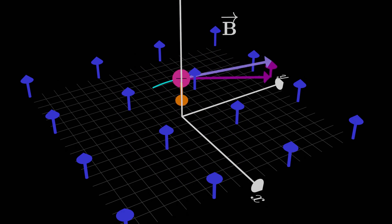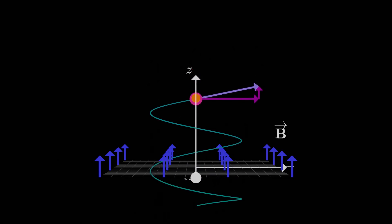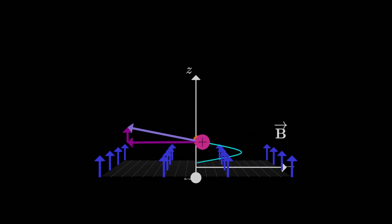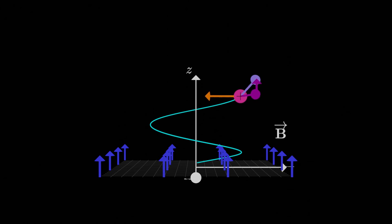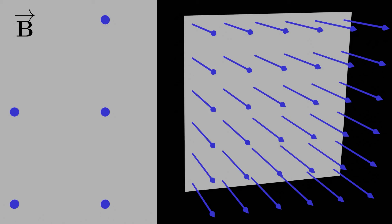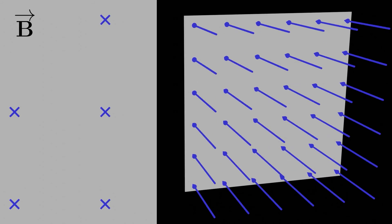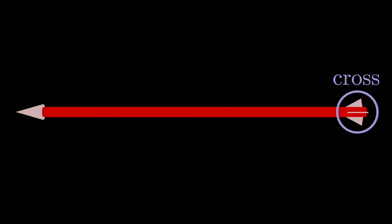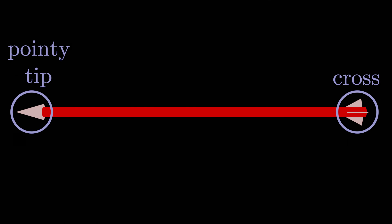Just one last point: when drawing magnetic fields on paper, if the magnetic field is coming out of the screen or out of the page, we use dots to symbolize that. If the magnetic field is going into the screen or into the page, we use little crosses. This symbolism comes from imagining an arrow — the back of the arrow has a cross shape, so a cross means the arrow is going into the page. If the arrow is coming toward us, we see the pointy tip, so it's just a dot coming out of the page.